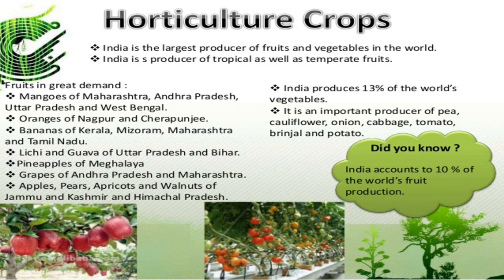India produces 13% of the world's vegetables. It is an important producer of pea, cauliflower, onion, cabbage, tomato, brinjal and potato. India accounts for 10% of the world's fruit production.